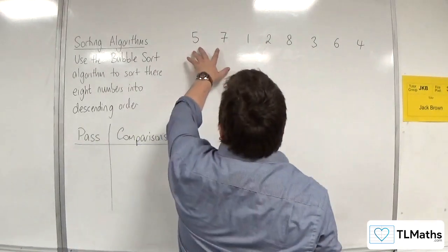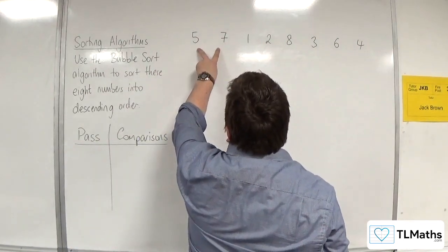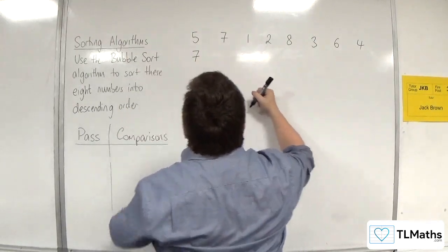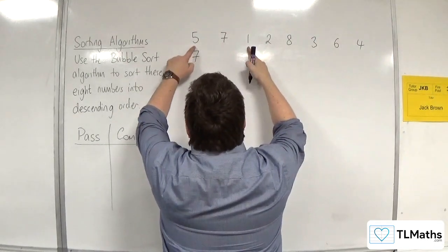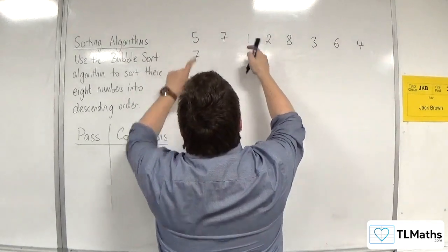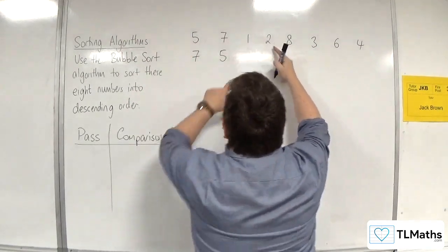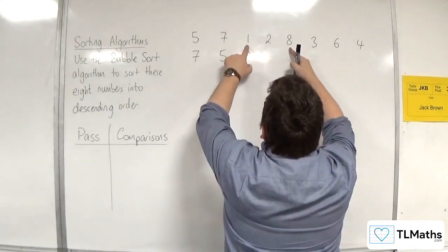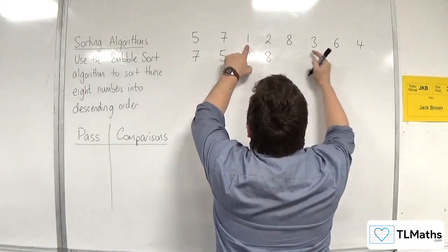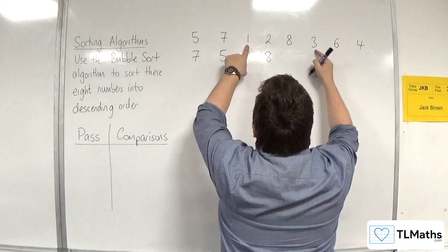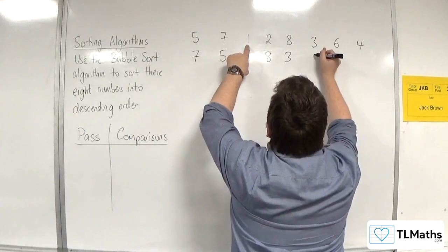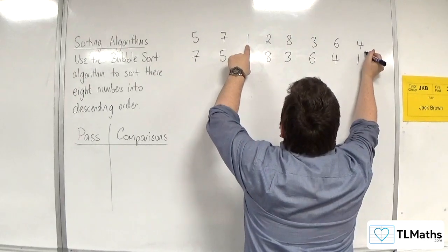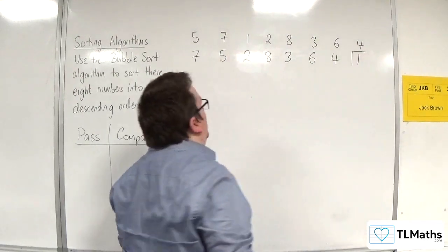We compare five and seven first off. Seven is larger than five, so seven goes to the left. Then we compare five and one — one is clearly smaller, so five goes there. Then one and two, so two goes there. One and eight, eight goes there. One and three, three goes there. One and six, and then one and four, and one has bubbled to the top of the list. So we cap it off.